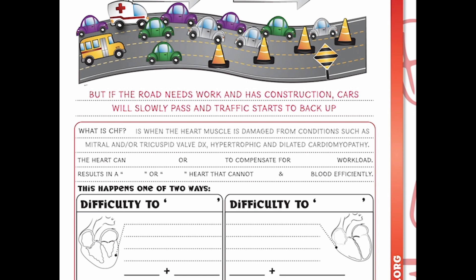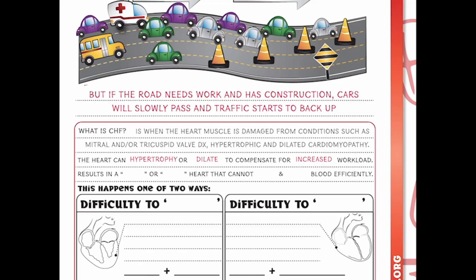Congestive heart failure, CHF, is when the heart muscle is damaged from conditions such as mitral or tricuspid valve disorders, hypertrophic disorders, and dilated cardiomyopathy. The heart can hypertrophy or dilate to compensate for an increased workload — meaning the heart muscle can grow or the heart can dilate because it's compensating for working so hard. Just like going to the gym and flexing that bicep, that muscle gets bigger — it's hypertrophying. The heart is no different, and this will result in a weak or stiff heart that cannot fill and pump blood efficiently.